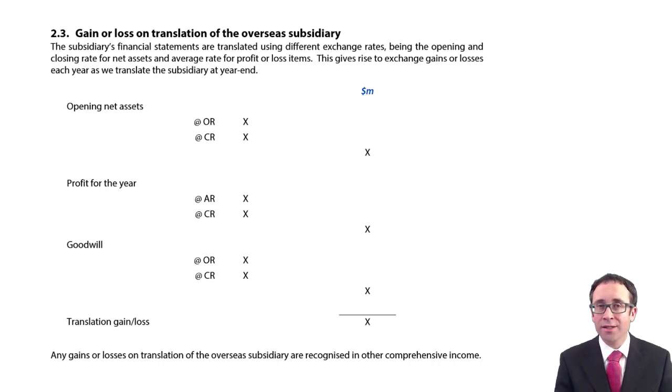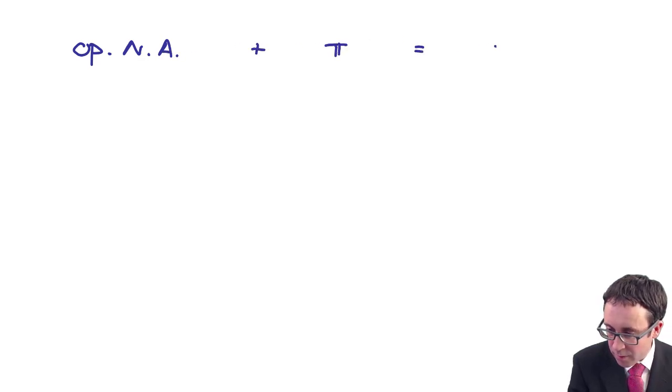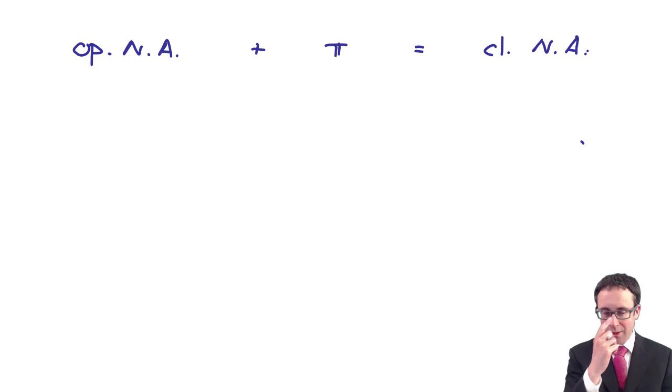Why it arises is because if we think about the accounting equation, so if we go back and say in terms of the accounting equation, if we look at my opening net assets plus my profit, that will equal my closing net assets, won't it?